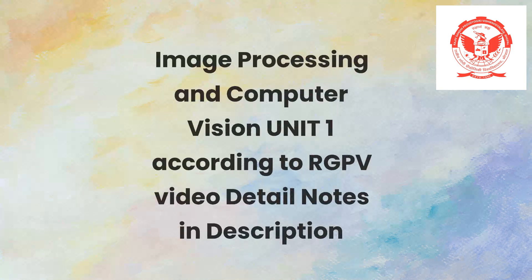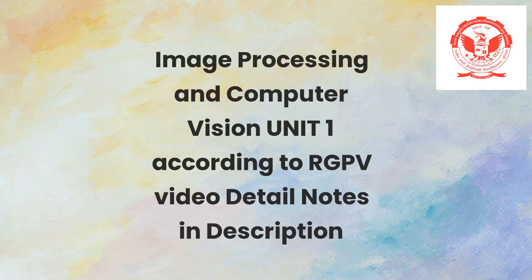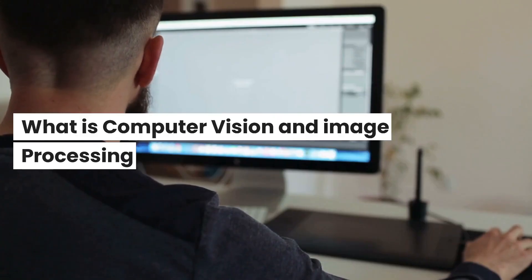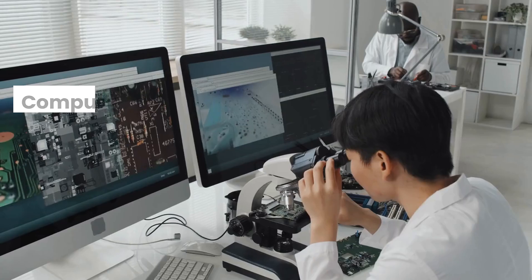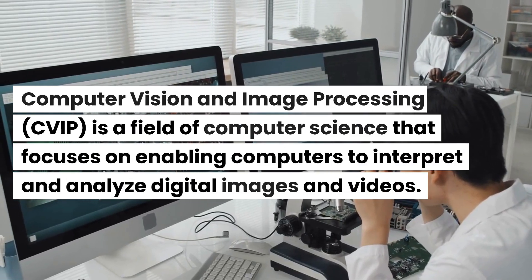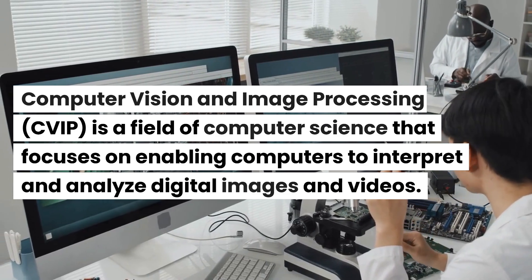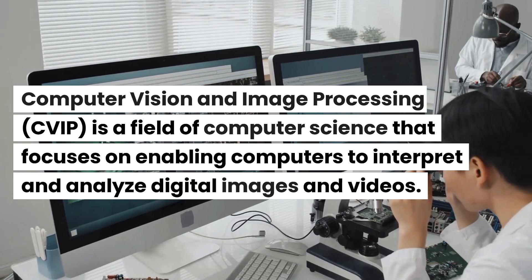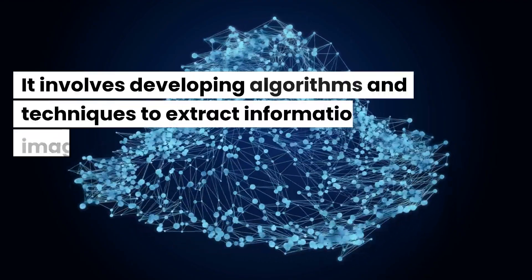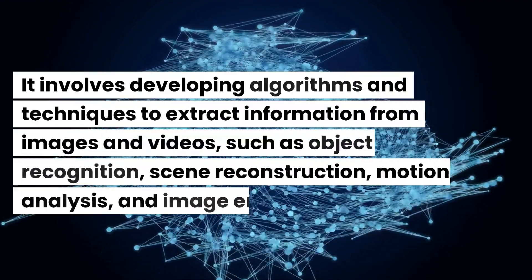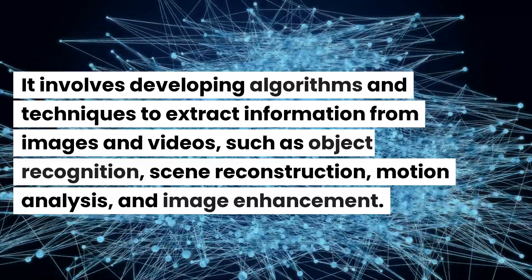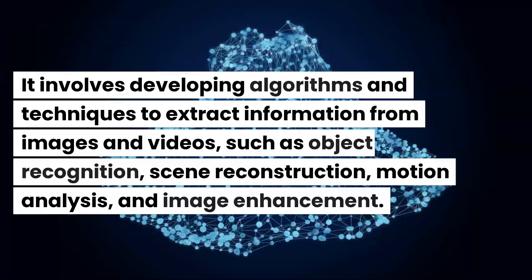Computer Vision and Image Processing (CVIP) is a field of computer science that focuses on enabling computers to interpret and analyze digital images and videos. It involves developing algorithms and techniques to extract information from images and videos, such as object recognition, scene reconstruction, motion analysis, and image enhancement.